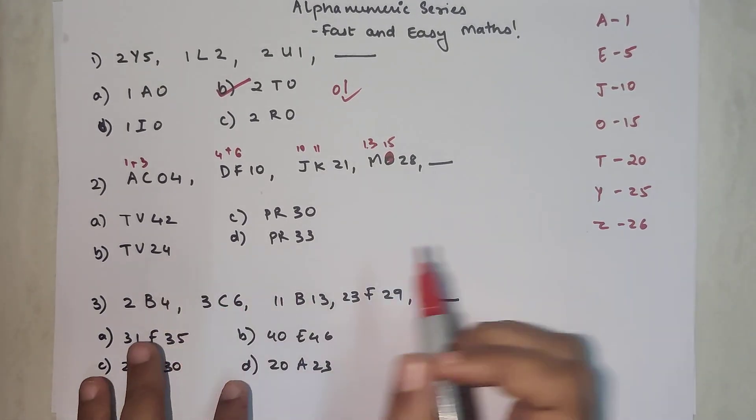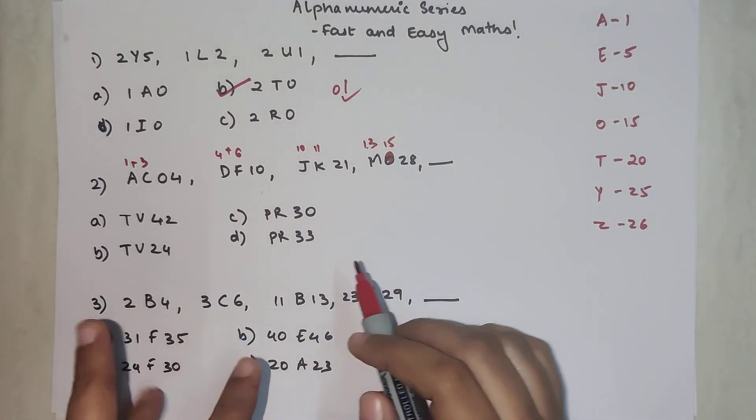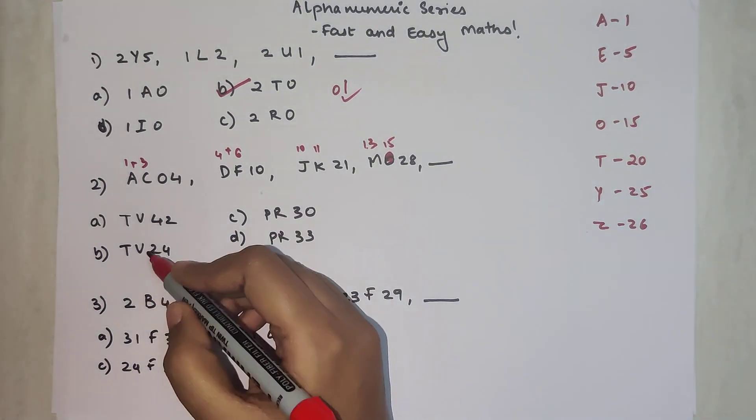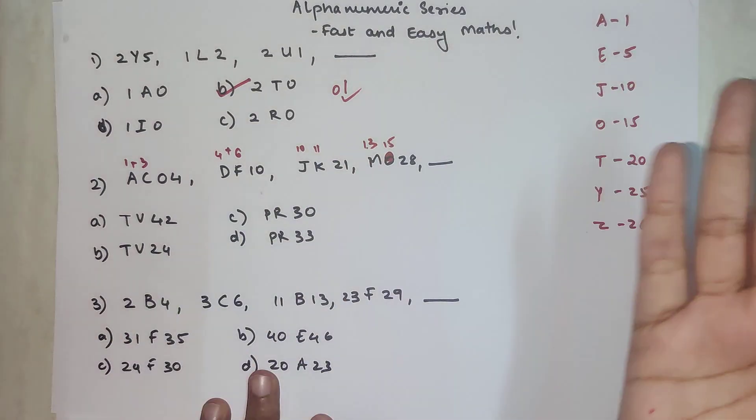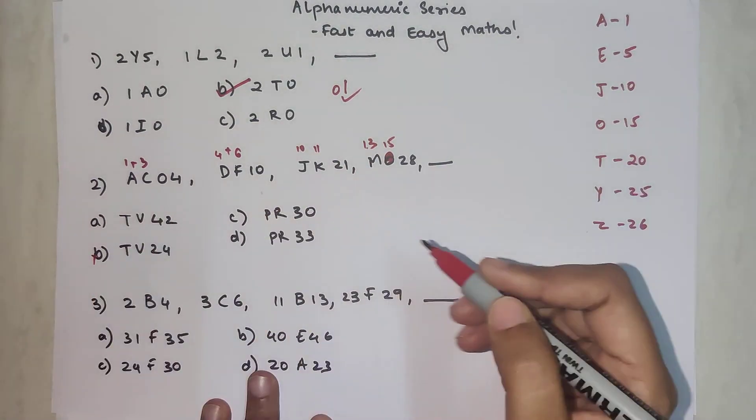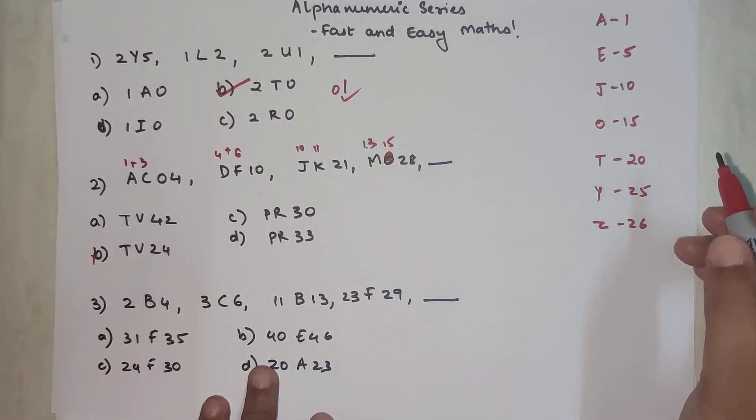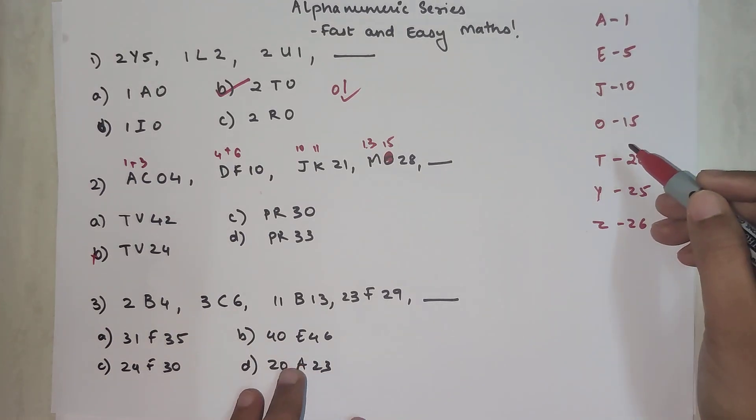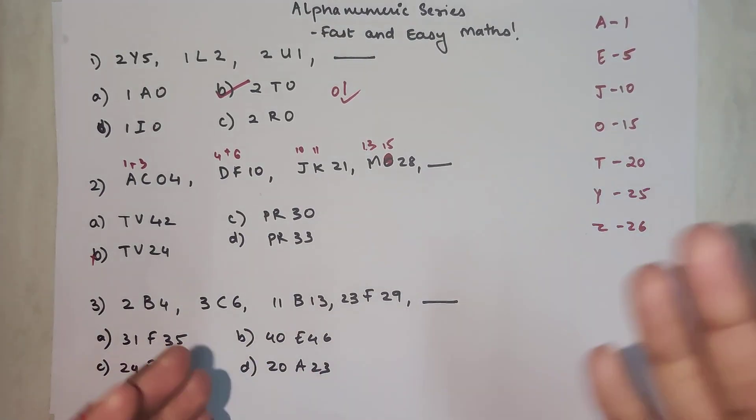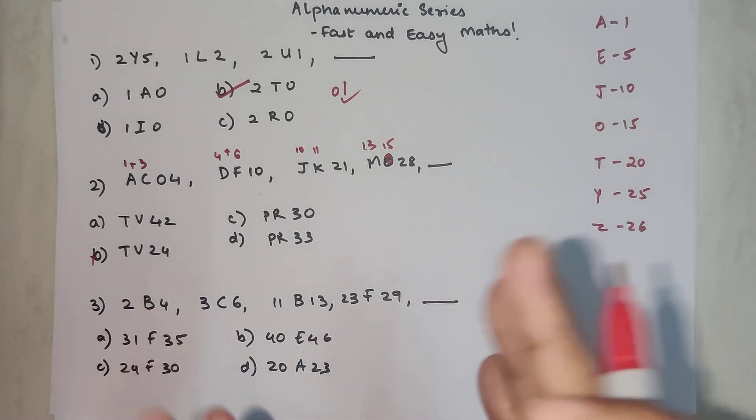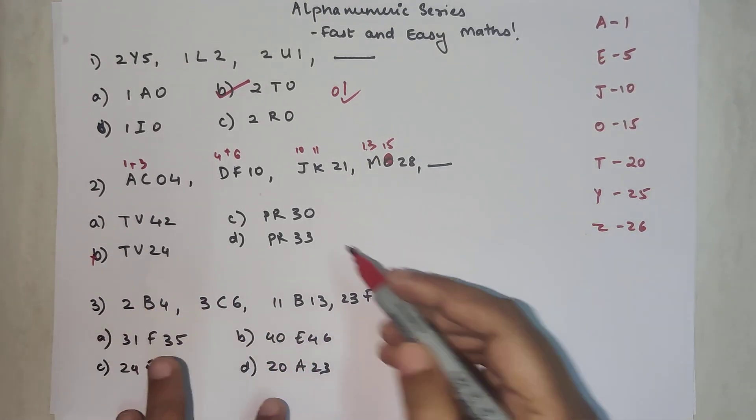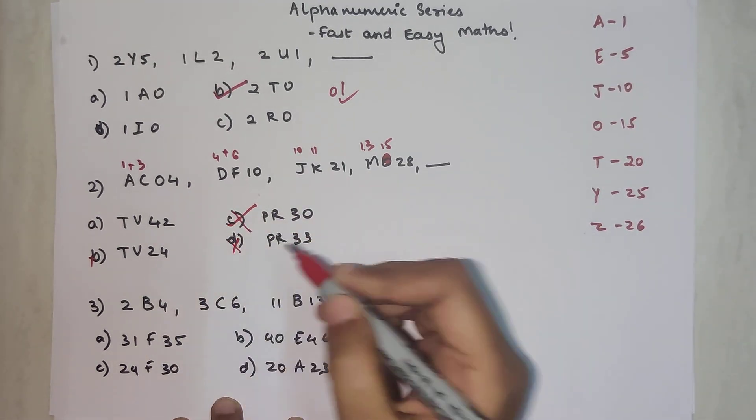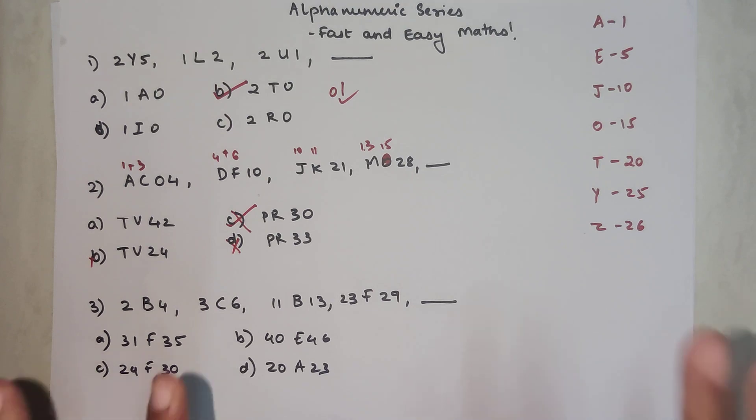Over here, we will stick to letters which we know already. T is twenty, so twenty-four is not possible. V is going to be something above T, so that is not possible. P and R - P itself is coming after O, and O is standing for fifteen. Anything which will come after fifteen will be sixteen, seventeen, something like that. R is also coming ahead of that, so you cannot have thirty by default. Even thirty-three is also not going to happen.